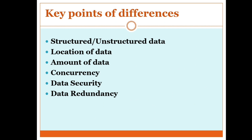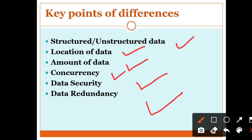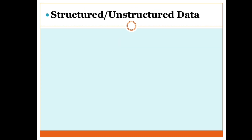Here are the key points of difference between the file system and DBMS: structured or unstructured data, location of data, amount of data, concurrency, and data security. Let's discuss every point of difference between the file system and DBMS one by one.